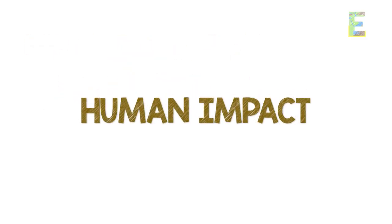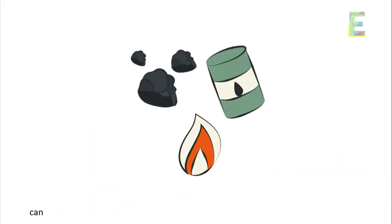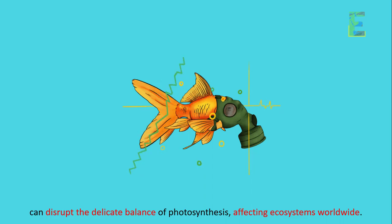Human impact. Human activities, such as deforestation and the burning of fossil fuels, can disrupt the delicate balance of photosynthesis, affecting ecosystems worldwide.